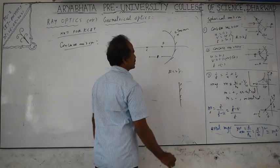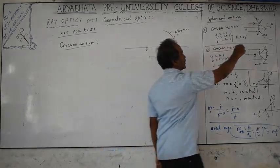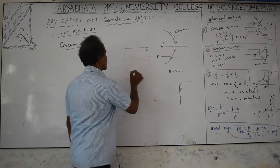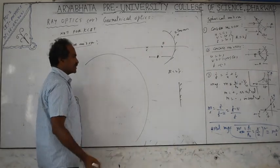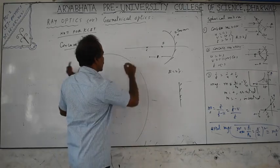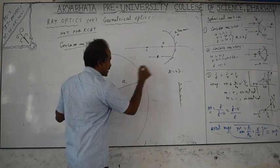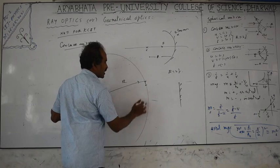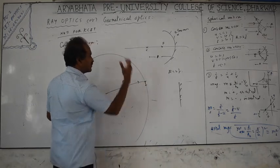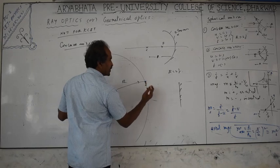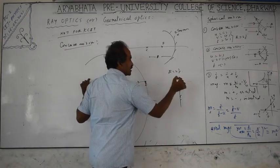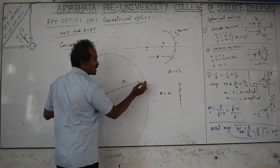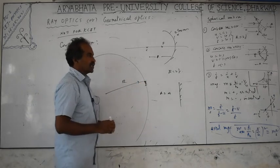A concave or convex mirror, if taken as a sphere, has a radius called the radius of curvature of that sphere. A plane surface is a straight line in one dimension. If you take a sphere of very large radius, a small portion of it is almost like a two-dimensional straight line. If you cut part of a sphere of very large radius, it becomes a plane. So a plane mirror is part of a sphere with radius equal to infinity.